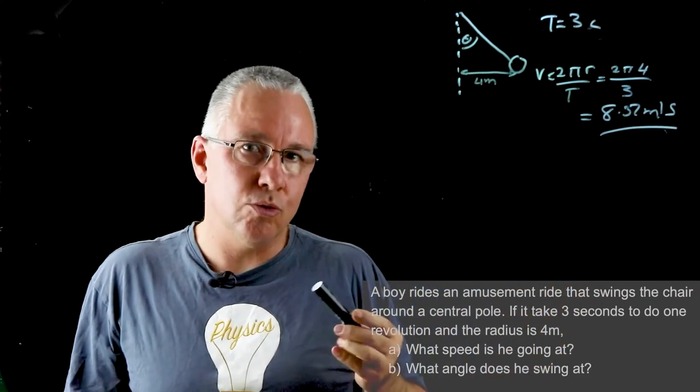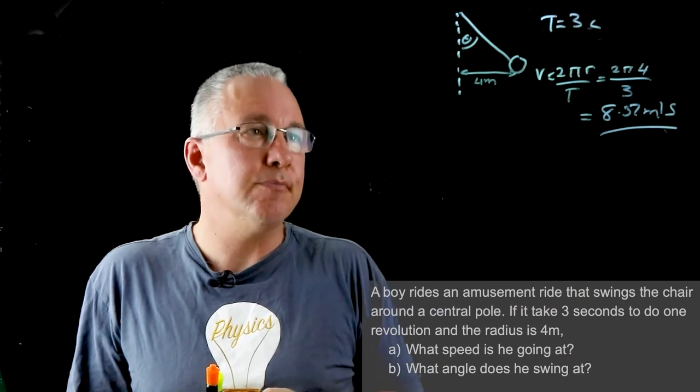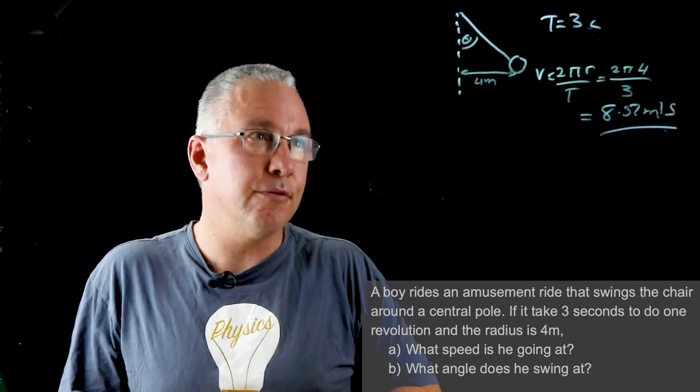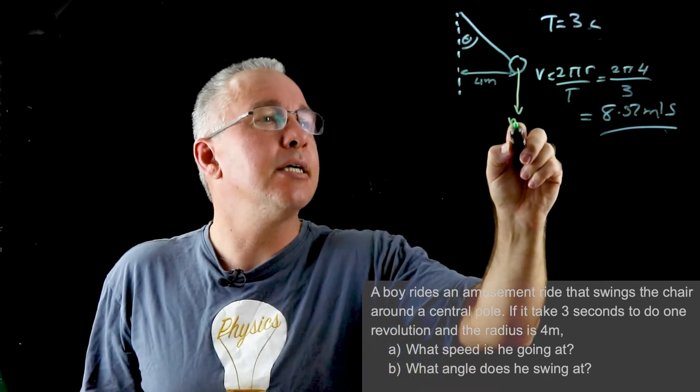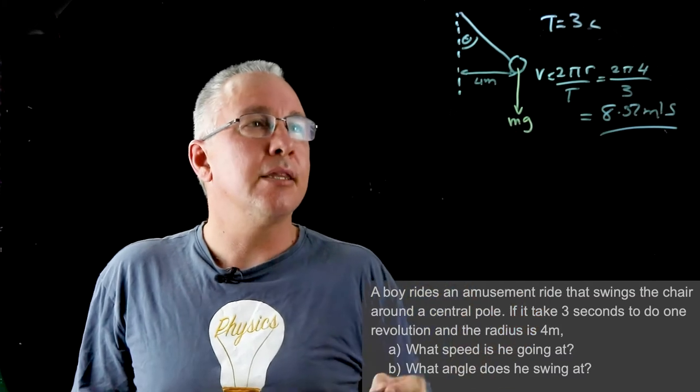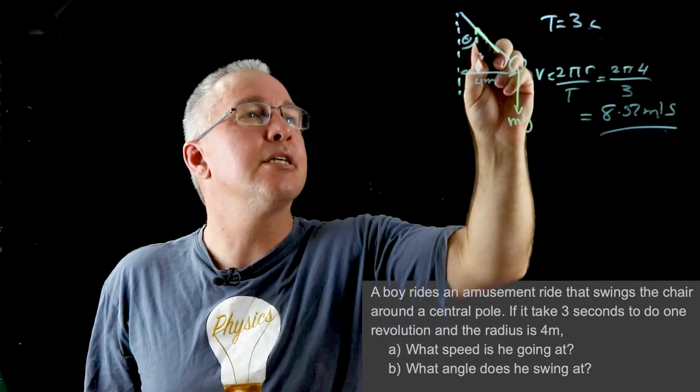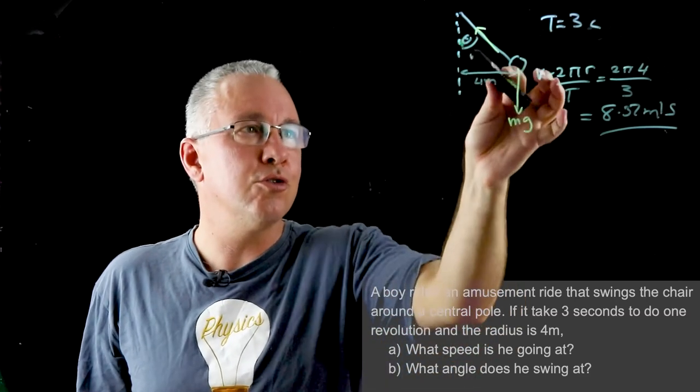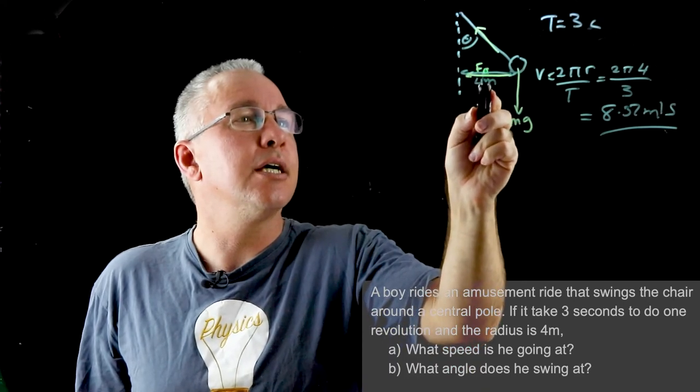But now we're getting into the aspect of the fact that it's a conical pendulum. And the key here is to appreciate the fact of the forces acting on the boy. Now the first force that's acting on the boy is the mg. The second force that is acting is the tension, which is going to be this value here. And those two combine, those two vectors add up to give us our centripetal force which is fc.